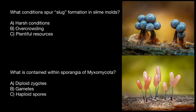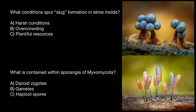I want to start with the second question today: what is contained within sporangia of myxomycota? Here on both pictures we can see reproductive structures of the slime molds. These reproductive structures, which we also call sporangia, help us to identify strains and different species of the slime molds.